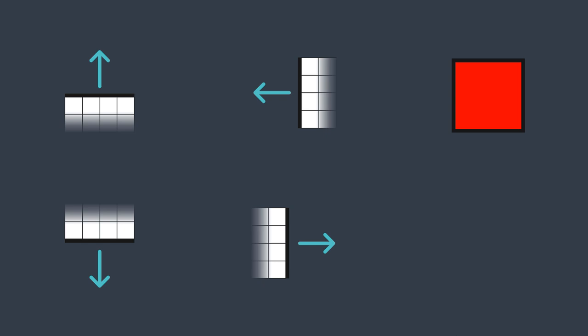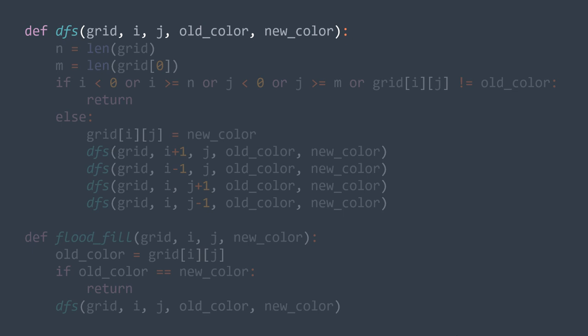If you aren't comfortable with recursion, you're probably wondering how it went to the right when it reached the bottom border — I'll answer that just after showing you the code. Our recursive function needs 5 parameters: the grid, the coordinates of the actual cell (i, g), the old color which is the color we're replacing, and the new color. Now we store the number of rows and the number of columns in N and M respectively, and we can start working.